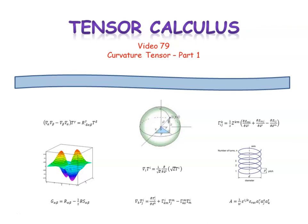Welcome to video number 79 in our series on tensor calculus. In this video, we'll show how the curvature tensor can be used to derive the values of the mean curvature and the Gaussian curvature that we defined in the last video.